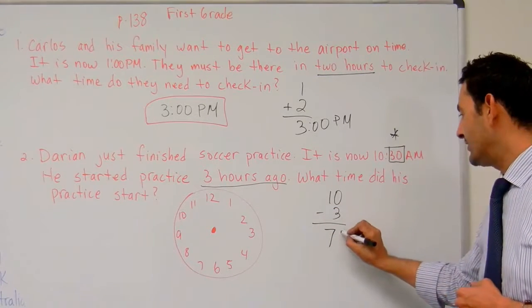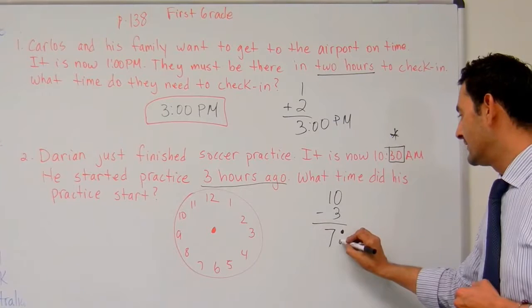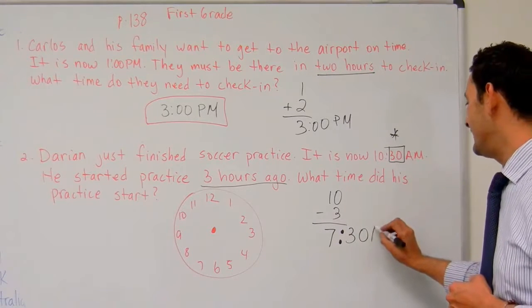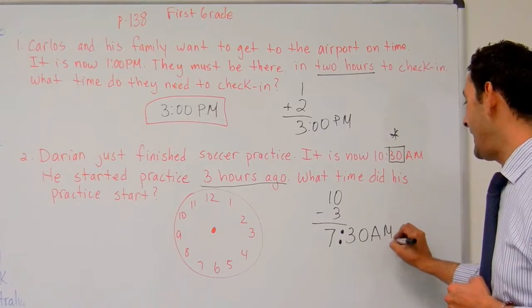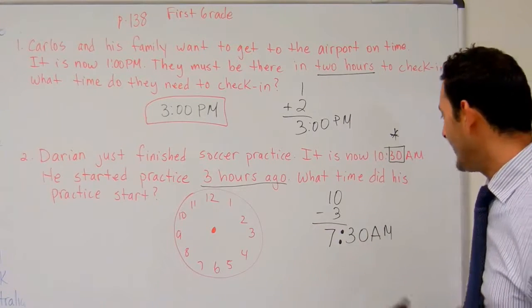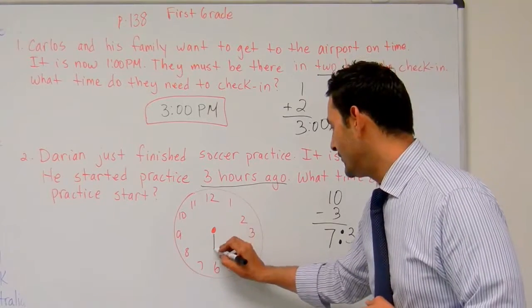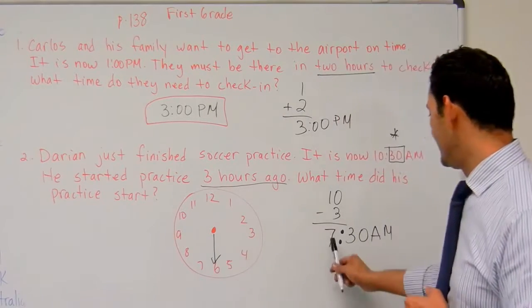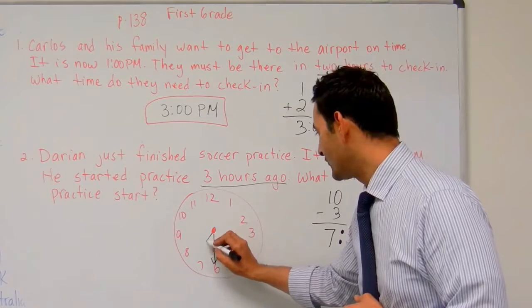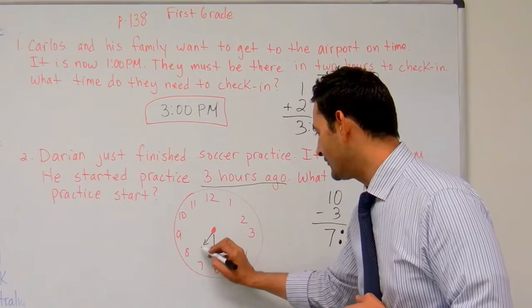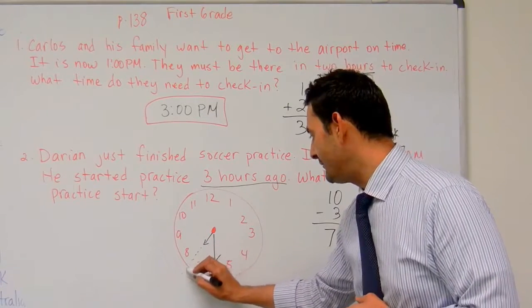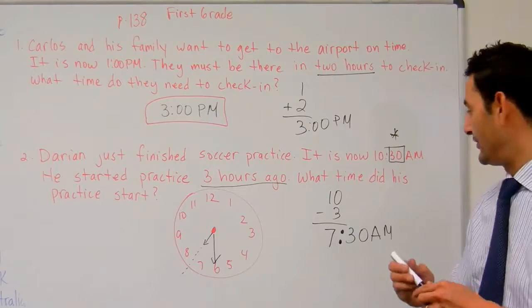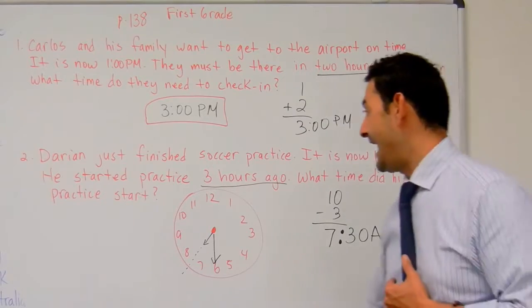I can't forget that 30 minutes — I'm going to bring down that 30 minutes. So he practiced at 7:30 a.m. Now we have to draw it. For 30 minutes, go straight to the six. And then the seven — we're going to draw the hour hand right past the seven, and that's going to be 7:30 a.m.